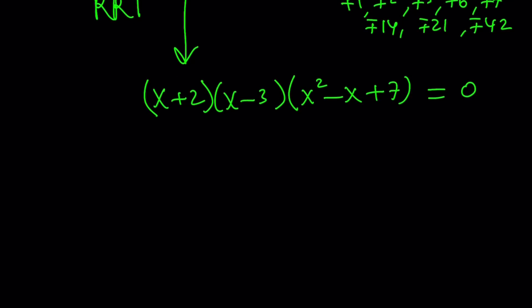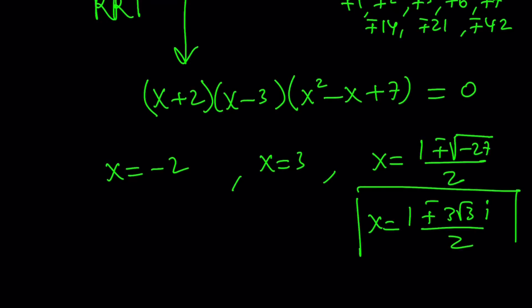So from here, if you set this equal to 0, you get x equals negative 2, x equals 3, and from the quadratic you get complex solutions. That's going to be 1 plus minus the square root of b squared minus 4ac, that is going to be negative 27, divide by 2. And then you can write that as 1 plus minus 3 root 3i divided by 2. So those are going to be the complex solutions, and these are going to be the real solutions. Those are going to be the solutions, that's it, and let's go ahead and talk about the second method.